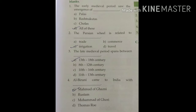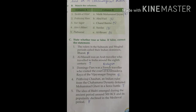Moving on to Exercise B: column A and column B — write the correct answer next to the question, do not mark the numbers. First one: Tarikh al-Hind — Al-Biruni. Second: Prithviraj Raso — Chand Bardai. Third: Sursagar was written by Surdas. Fourth: Ain-i-Akbari was written by Abul Fazl. Then Padmavat was written by Malik Mohammed Jayasi.